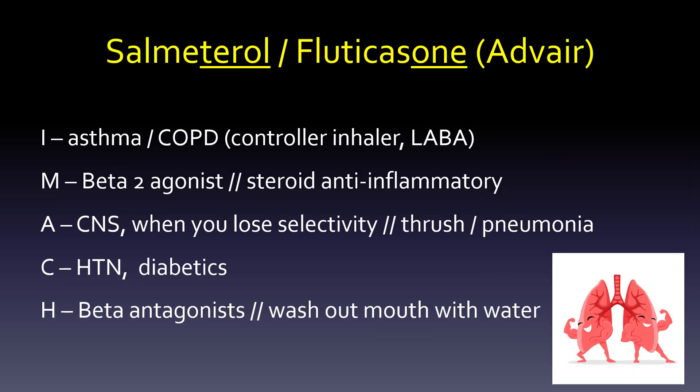Salmeterol and fluticasone, or Advair — same thing. It's for asthma and COPD, but in contrast to albuterol, this is the controller inhaler, the long-acting beta-2 agonist. The mechanism of action opposes both sides of asthma: the beta-2 agonist opens up the lungs to deal with bronchospasm, and the steroid acts as an anti-inflammatory. For adverse effects — there are muscled lungs in the image here — when you lose selectivity you get CNS jitteriness. With a steroid, since it's an immunosuppressant, using it locally in the mouth causes thrush, which is why washing the mouth out with water after each use makes so much sense. Pneumonia is also a concern because of local immunosuppression.